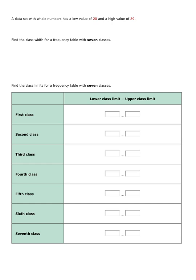Find the class width for a frequency table with seven classes. When you calculate the class width, you take the highest minus the lowest and divide that by the number of classes. So for this problem we have 89 minus 20 divided by 7, which is 69 over 7, and round up.